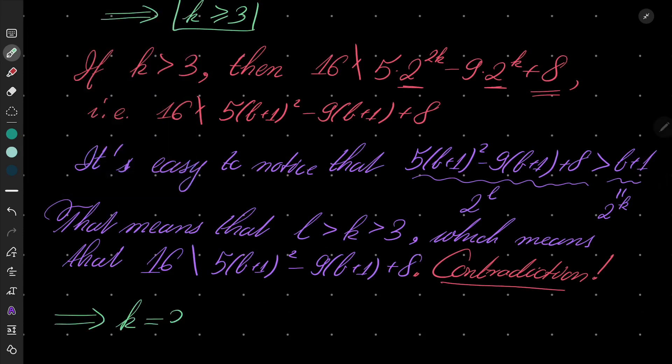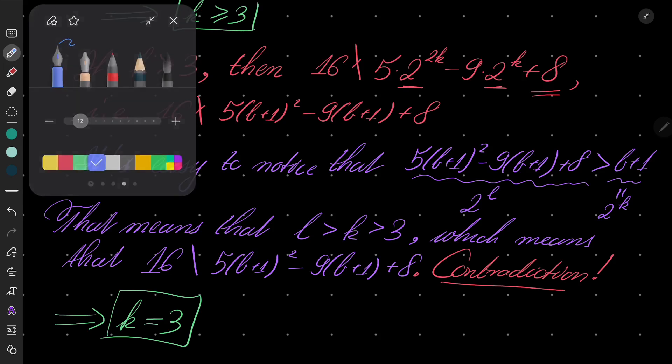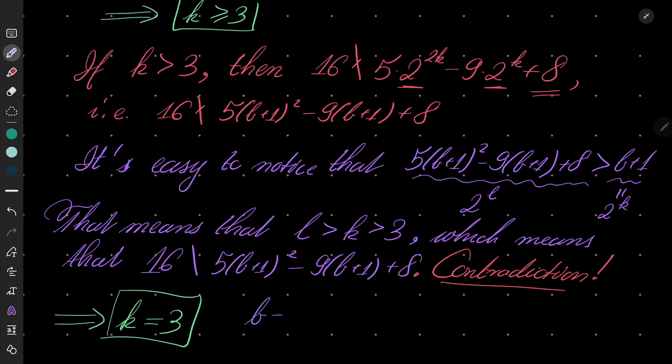So we have only one possibility: K must be exactly equal to 3. In this case, that means B + 1 equals 8, so B equals 2³ - 1, which is 7.